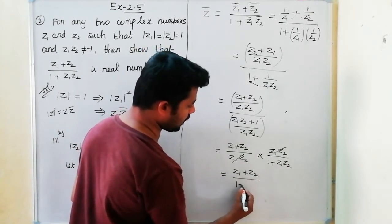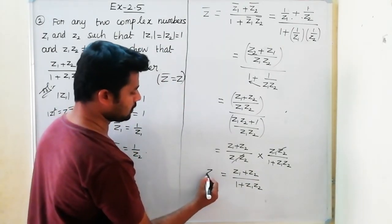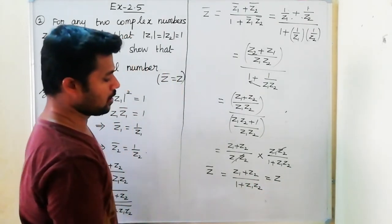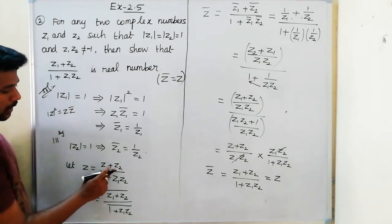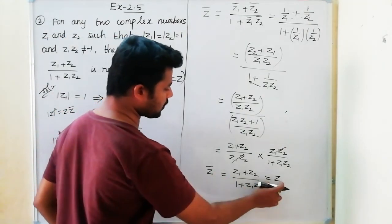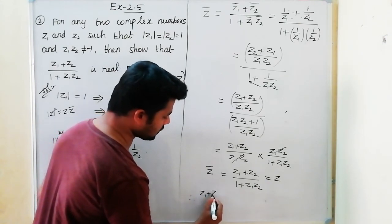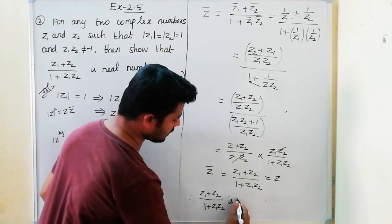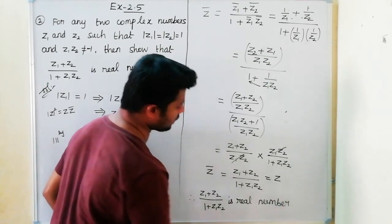So z̄ equals (z1 plus z2) divided by (1 plus z1·z2), which is the same as z. Since z̄ equals z, the expression is a real number. Hence proved.